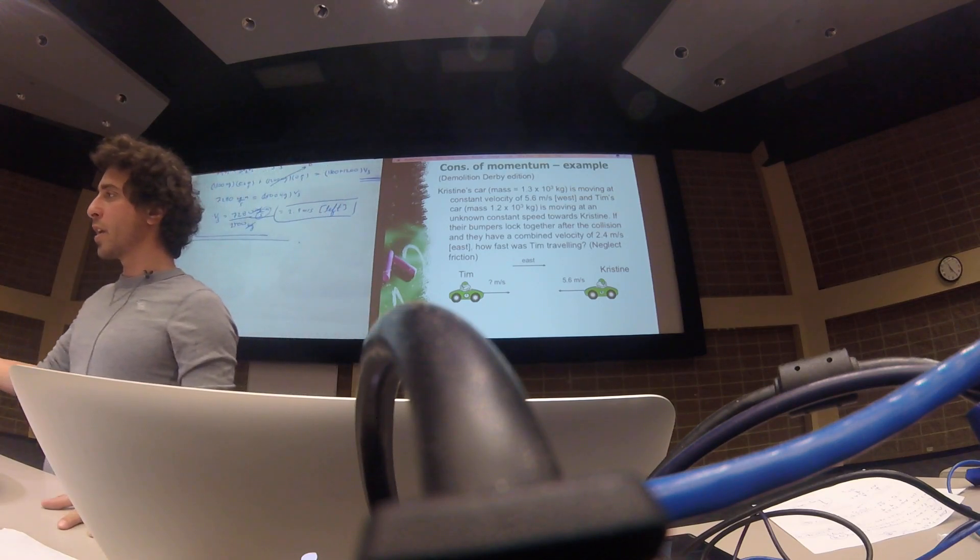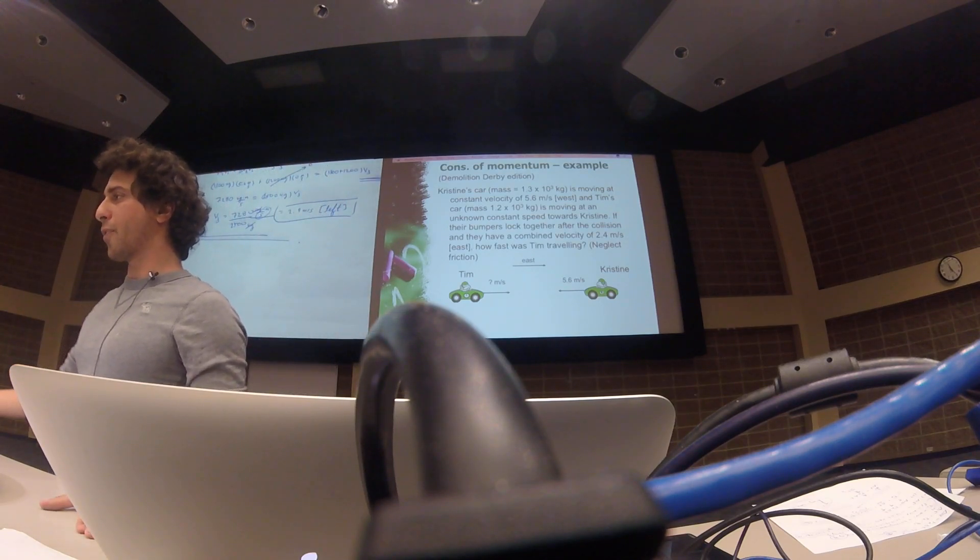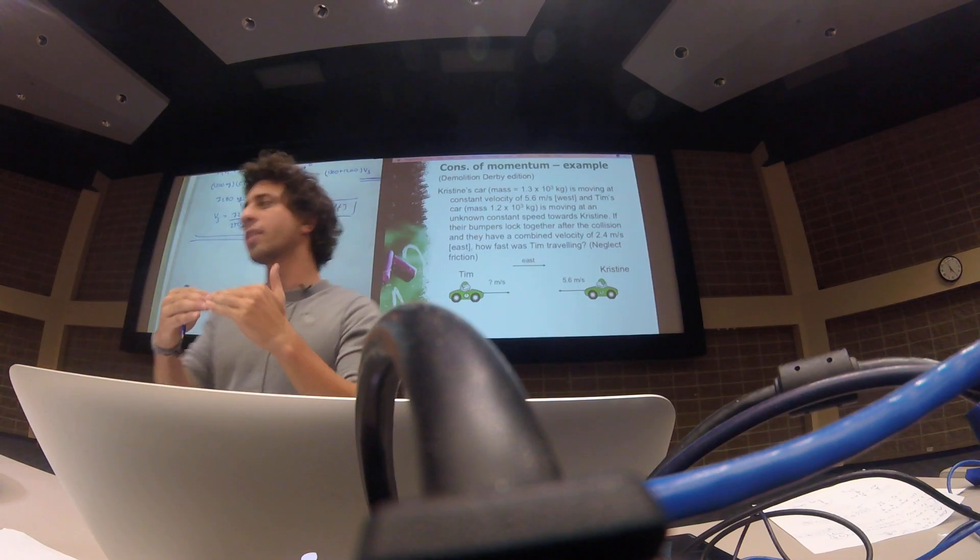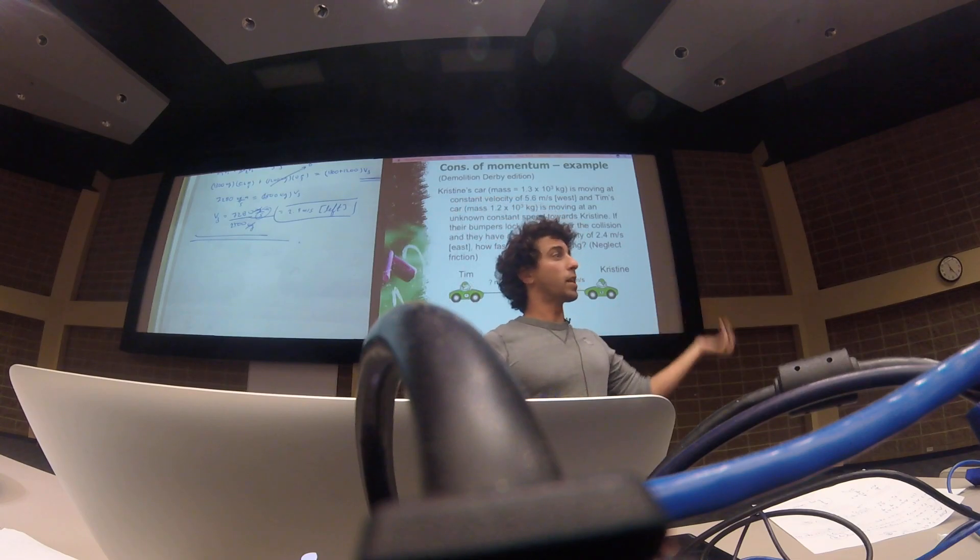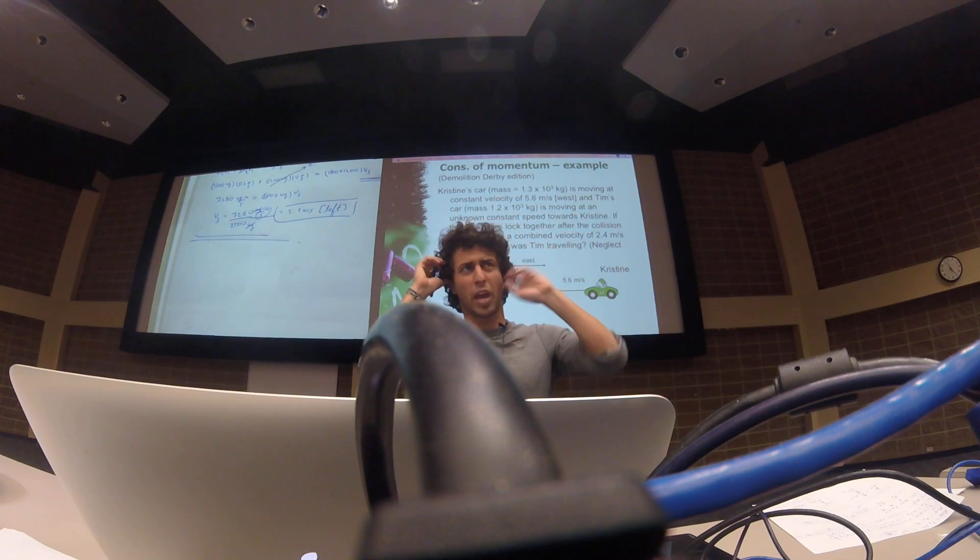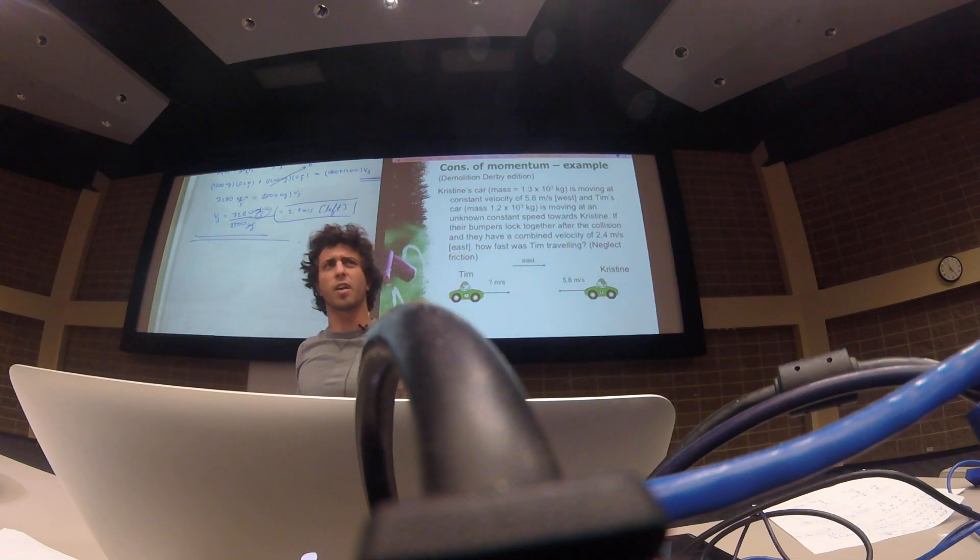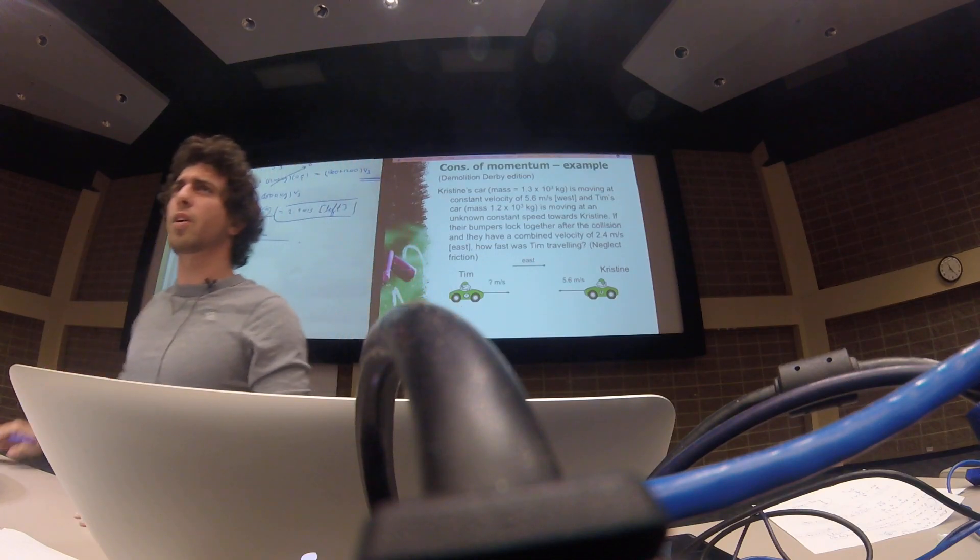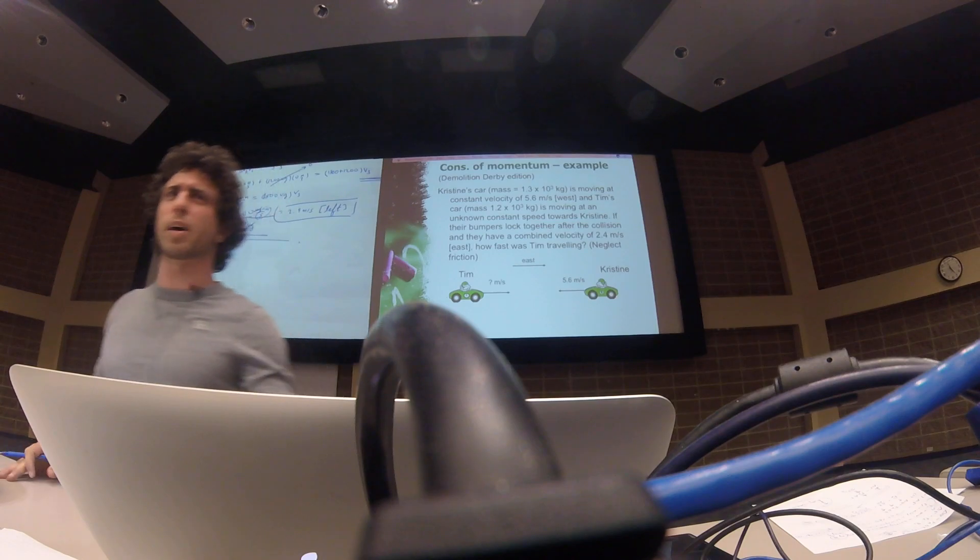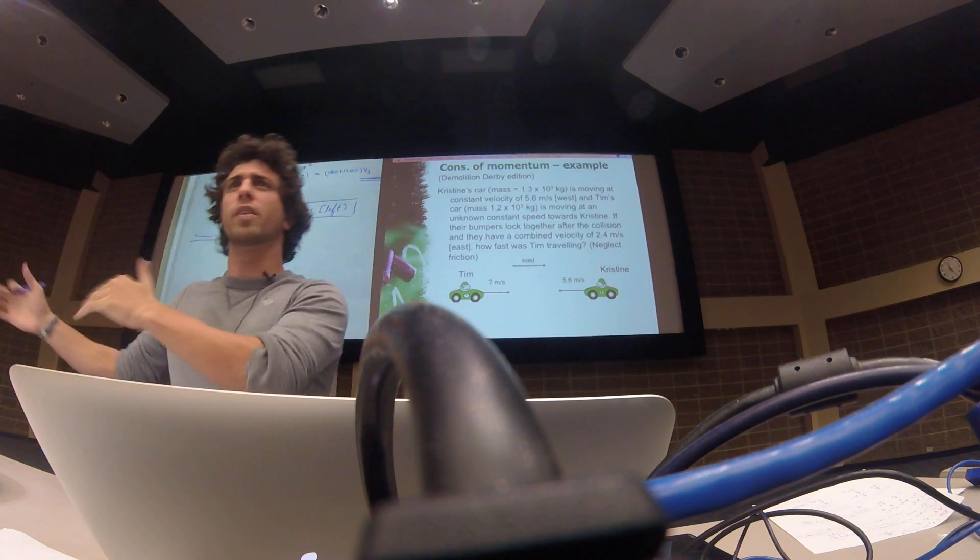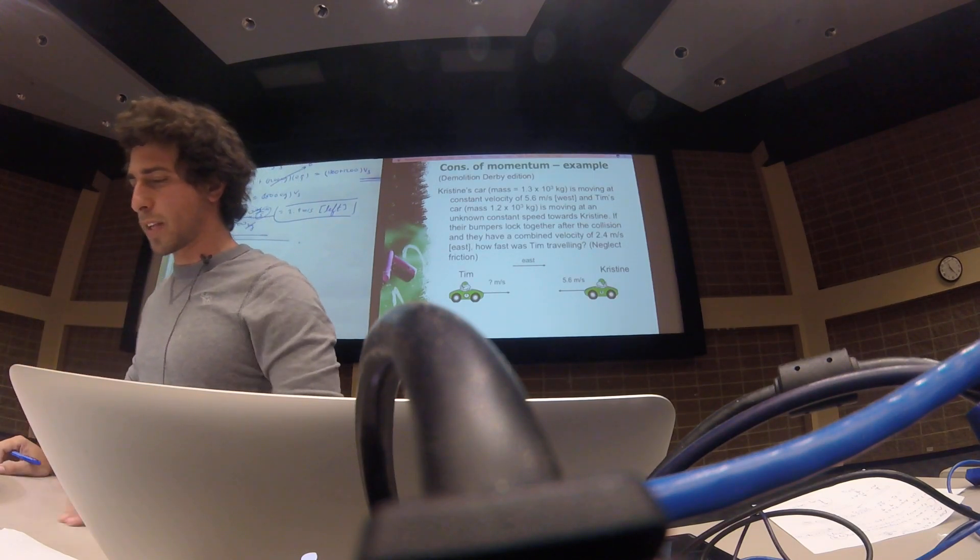Because Tim is lighter than Christine, but for some reason after the collision, they were moving in the direction that Tim was coming in. So Tim must have been going faster. And that's a good way to know if you got the right answer or not, right? You can kind of gauge, oh, my speed for Tim is less than my speed for Christine, but the question tells me that they're moving this way afterwards. So let's work through and see.